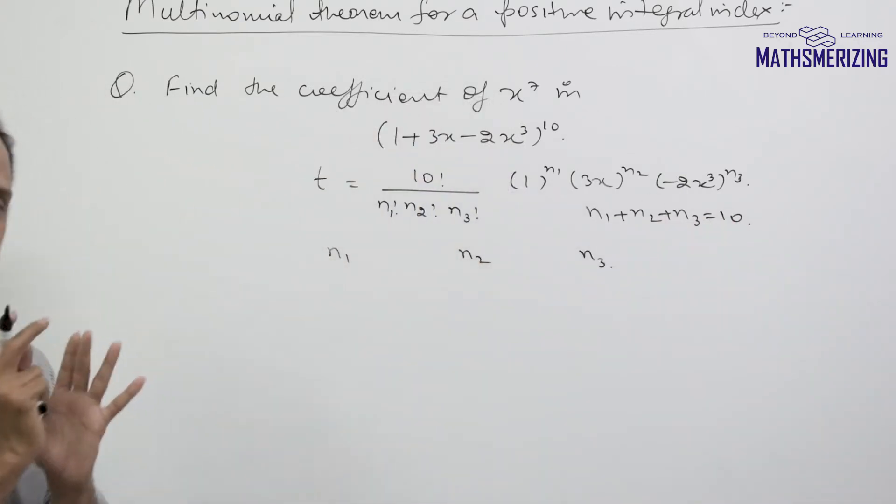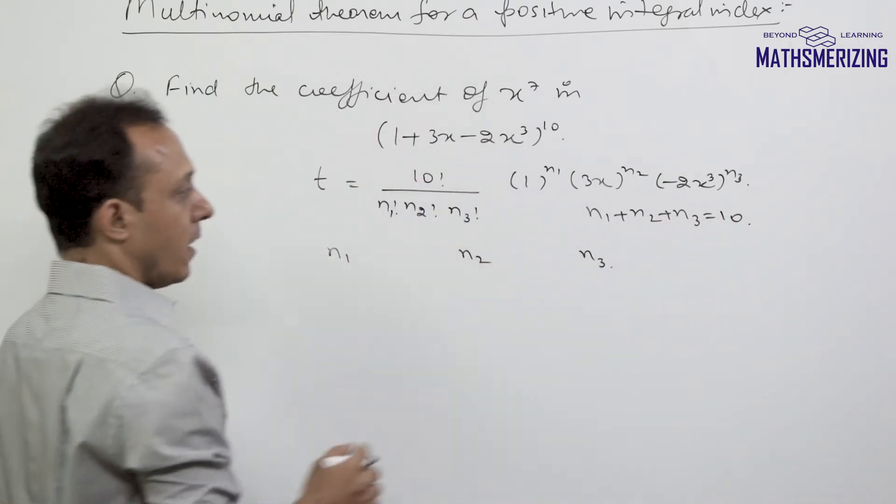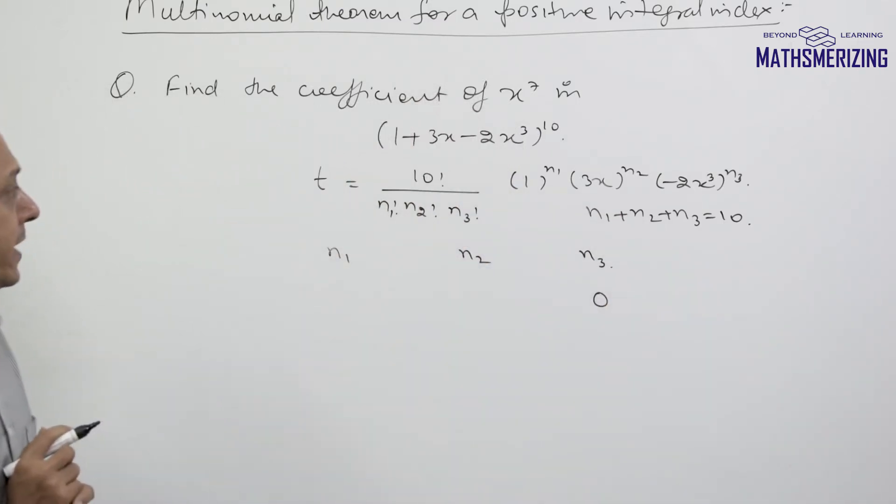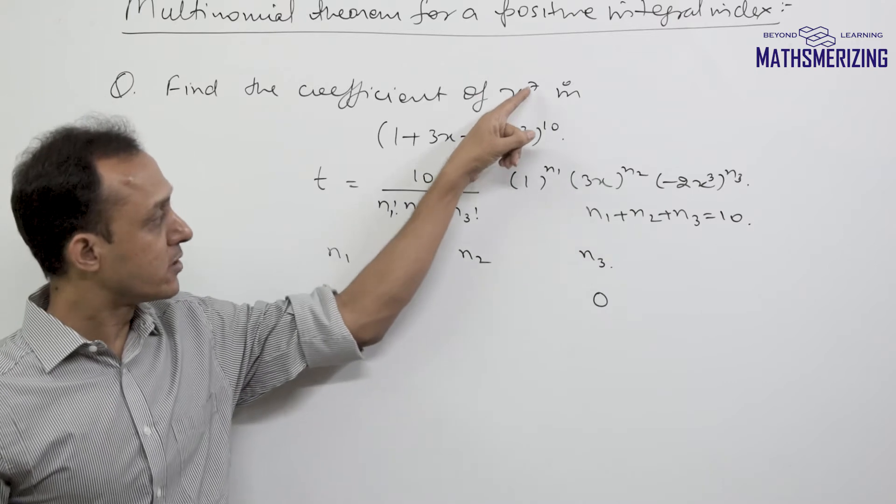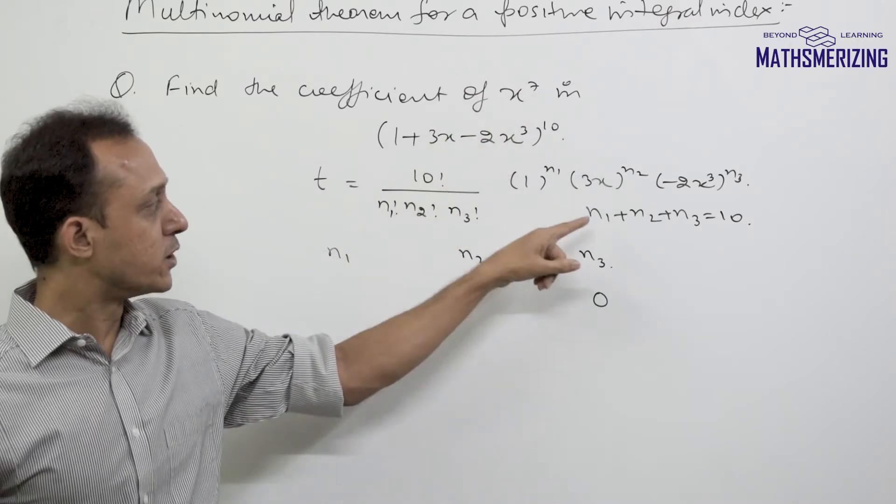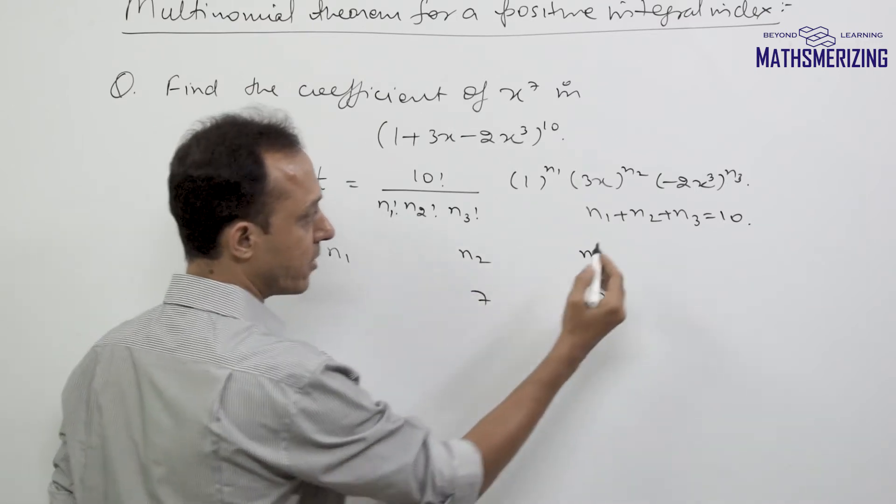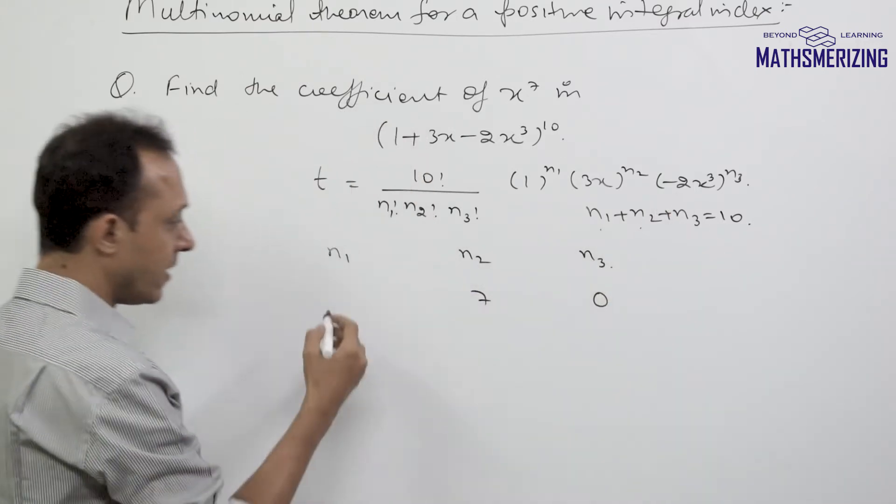Case 1: If I take n3 as 0, I need the coefficient of x to the power 7, so I'll take n2 as 7, which gives me n1 as 3.